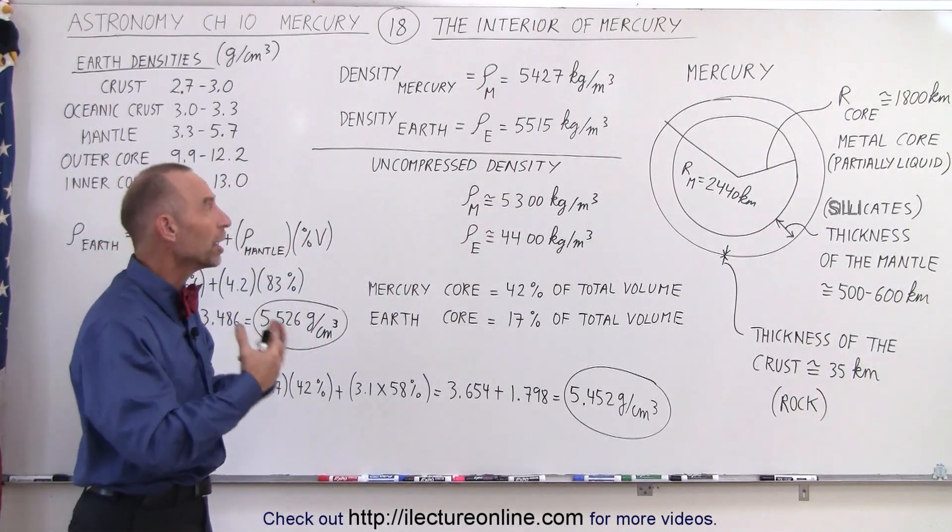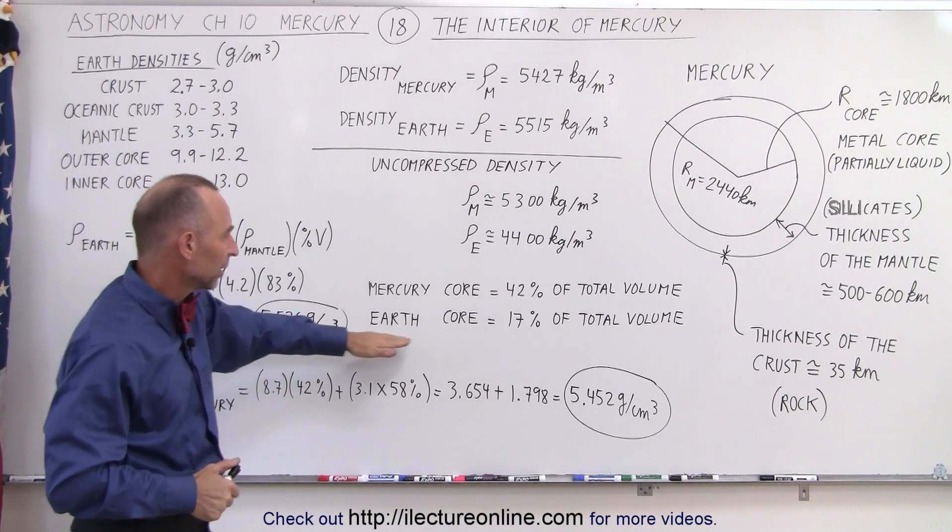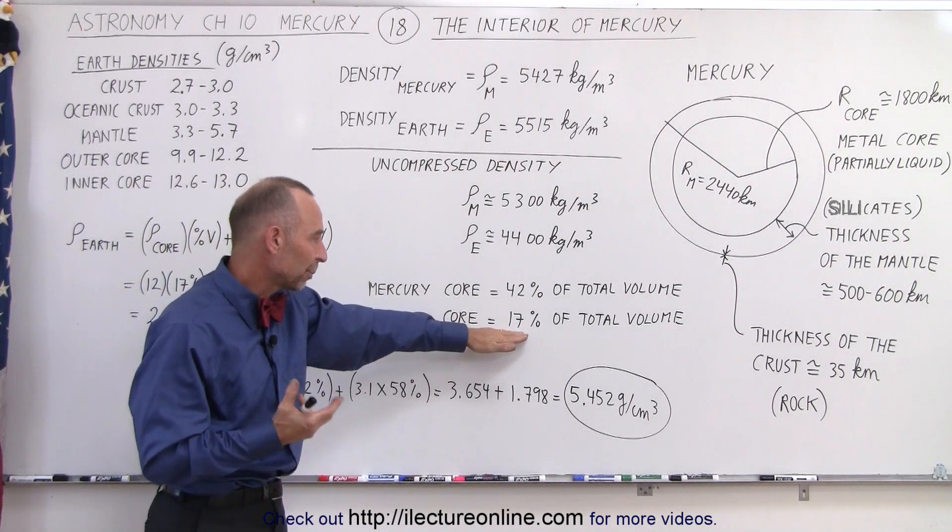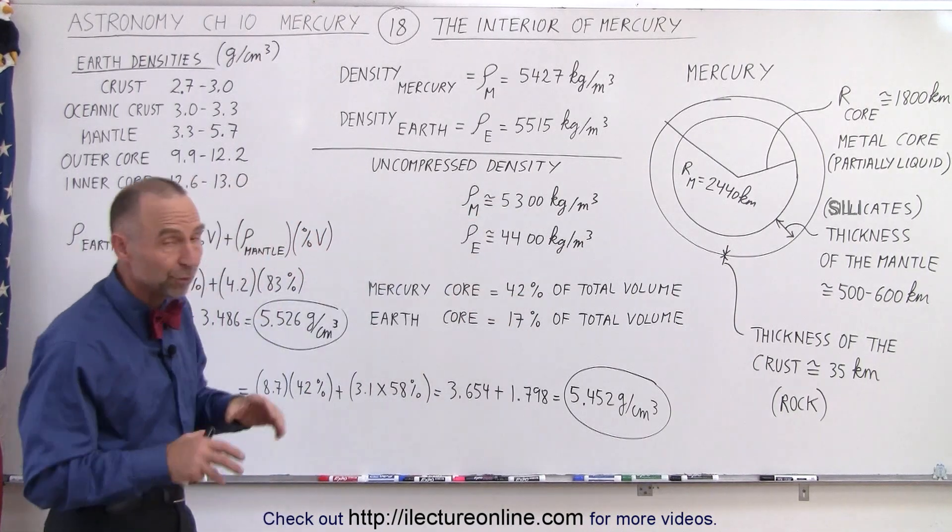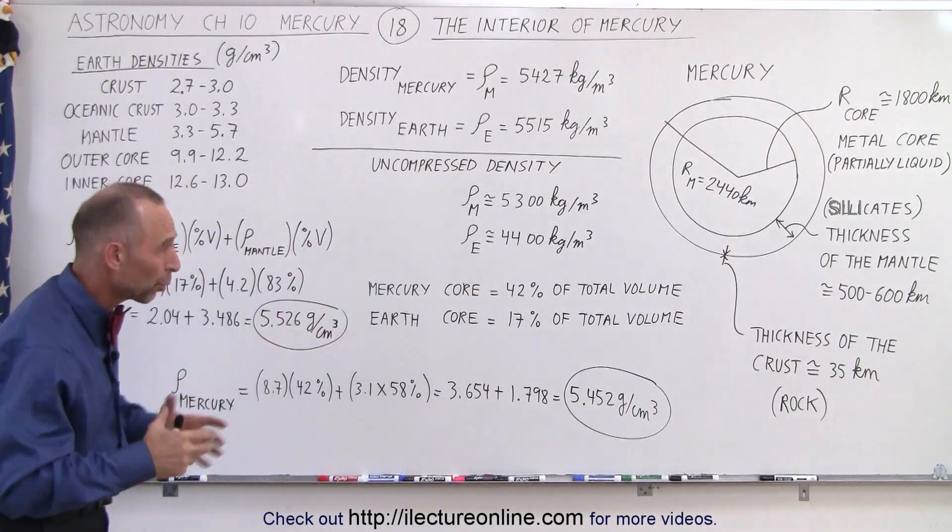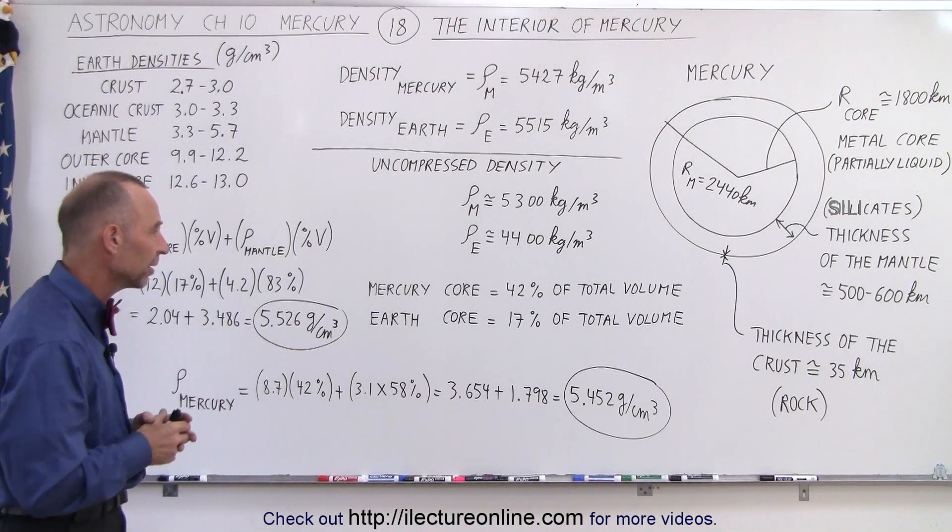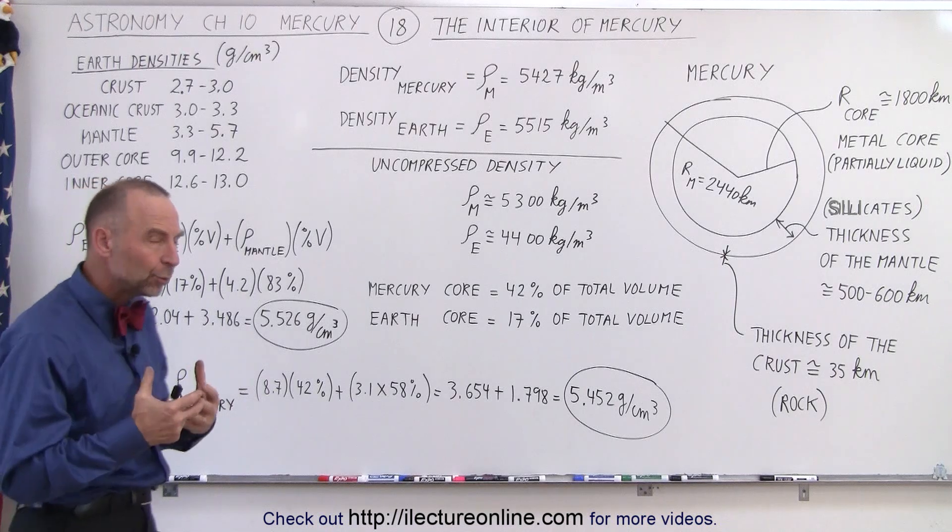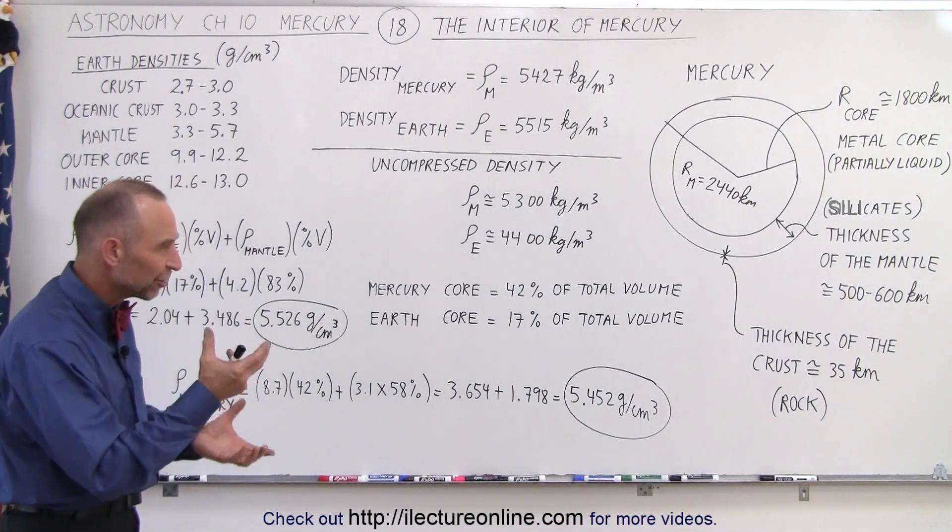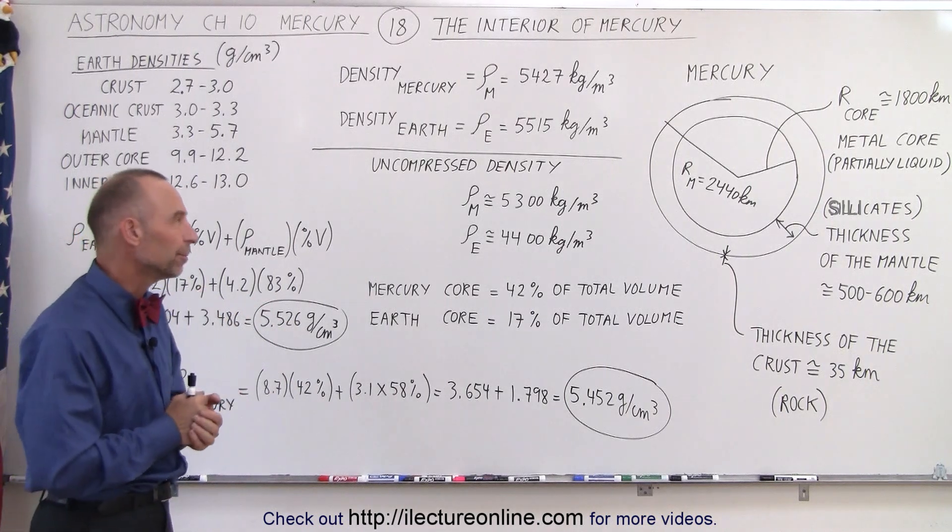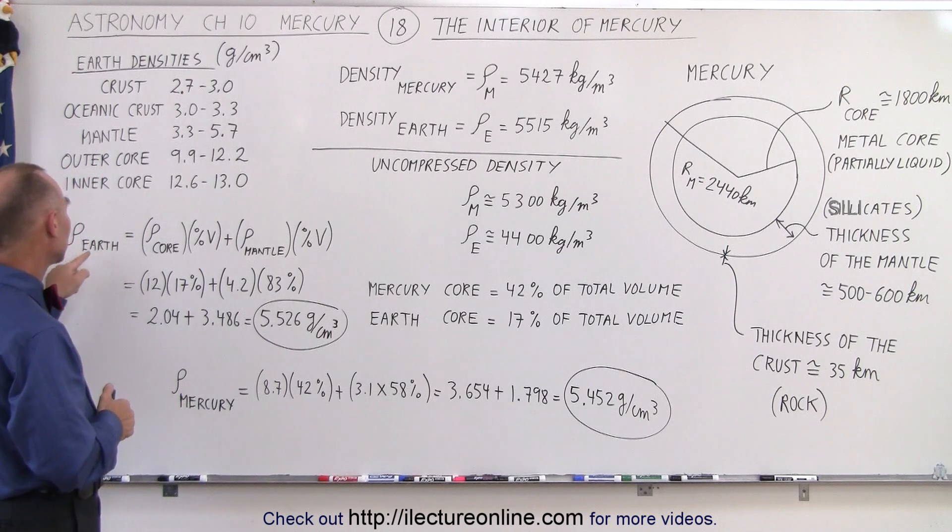Notice the metal in the Earth, the core, takes up a volume of about 17 percent, and for Mercury it's about 42 percent. Again, a much greater proportion of the volume of the planet Mercury is metal versus that of the Earth. Now how do we calculate the density and how do we calculate the various proportions of metal versus mantle?